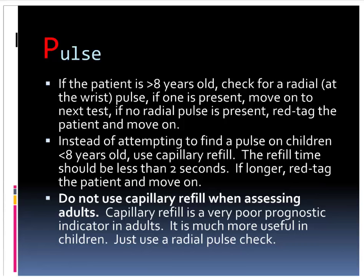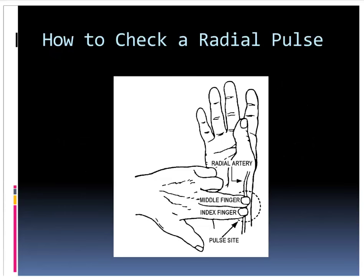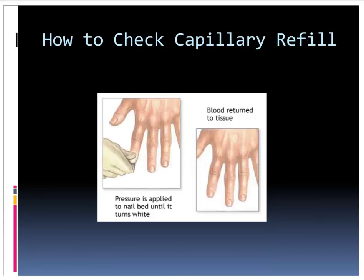Instead of attempting to find a pulse on children — which requires checking in a different location on the arm — we use capillary refill: press down on the nail bed and watch how long it takes to change color. For adults, this is not very reliable; it's equally unreliable in kids but much easier to perform than a full pulse check if you're not proficient with checking a child's brachial pulse. Press on the nail bed, watch it turn white, then lift up — it should turn pink in under two seconds. Anything longer than two seconds means the patient is perfusing poorly: red tag and move along.